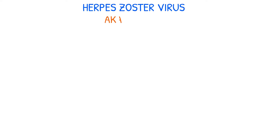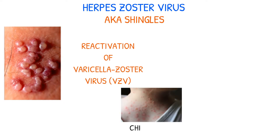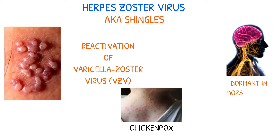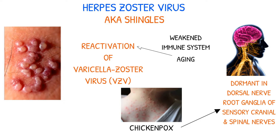The herpes zoster virus, also known as shingles, is caused by the reactivation of the varicella zoster virus in individuals who have previously had chickenpox. The virus remains dormant in the dorsal nerve root ganglia of the sensory cranial and spinal nerves. Shingles commonly occurs when a person's immune system is weakened, and the risk of developing this condition increases with age.